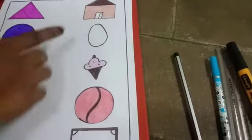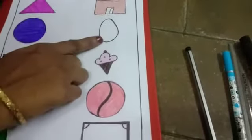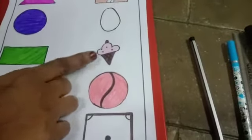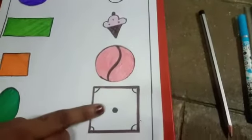Figures are hat, egg, ice cream, ball, and carom board.